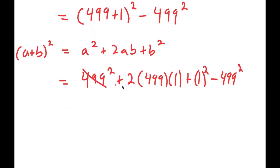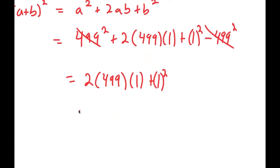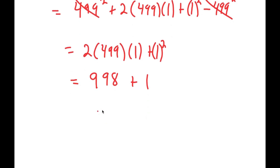Now I can cancel out 499 squared and negative 499 squared. So I'll be left with 2 times 499 times 1 plus 1 squared. 2 times 499 is 998 times 1 is just 998, and plus 1 squared which is plus 1. And this is equal to 999.